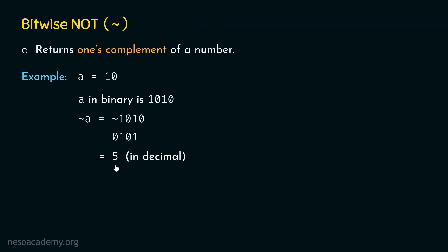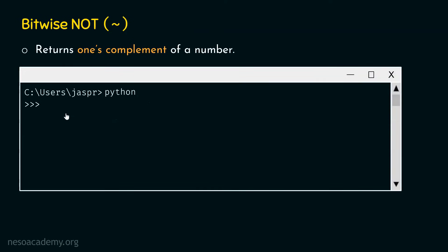Let's verify this through the Python interpreter. We open the command prompt, type A = 10, then type ~A (tilde A) and hit enter. We get minus 11. But why? We expected 5, not minus 11. We need to understand why we are getting minus 11 here — we must be doing something wrong in our calculations.